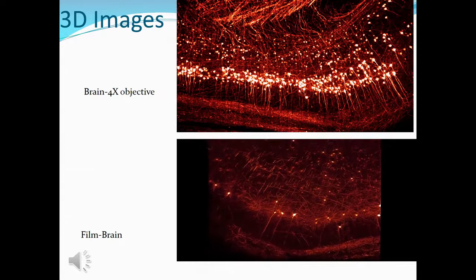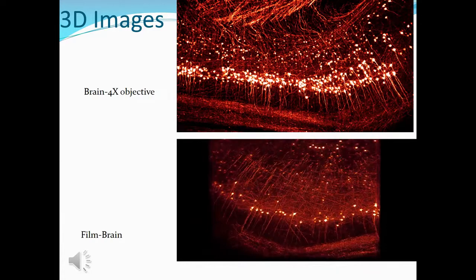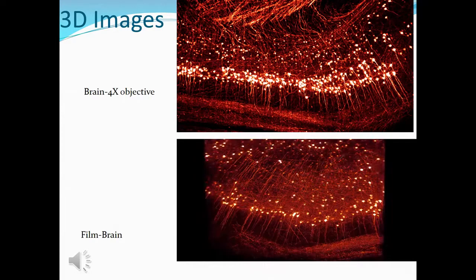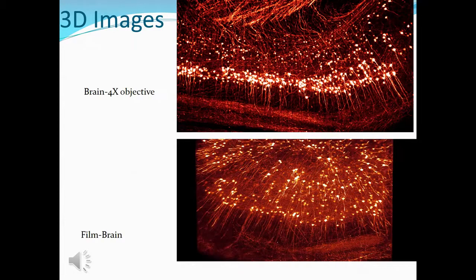Here you see an image and a film of a neural network in the brain. As you can see in the movie, it reveals a great deal of information. The resolution is quite high and we are able to go and see the inner structure. All these things can be done if we have a very thin sheet of light, and this design provides that ability.